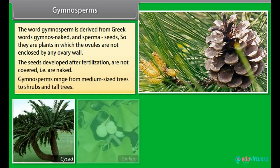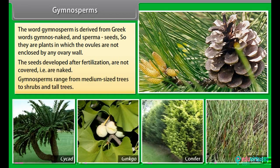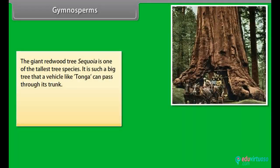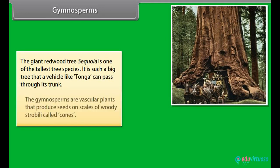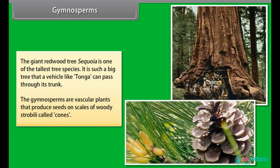Gymnosperms range from medium-sized trees to shrubs and tall trees. The giant redwood tree sequoia is one of the tallest tree species — it is such a big tree that a vehicle like a Tonga can pass through its trunk. The gymnosperms are vascular plants that produce seeds on scales of woody strobili called cones.